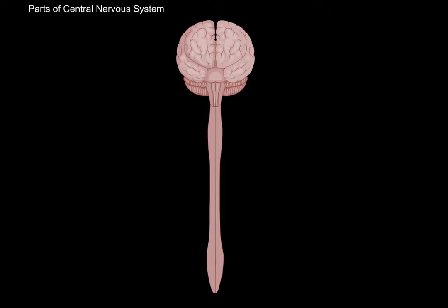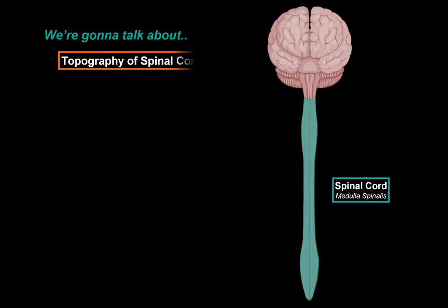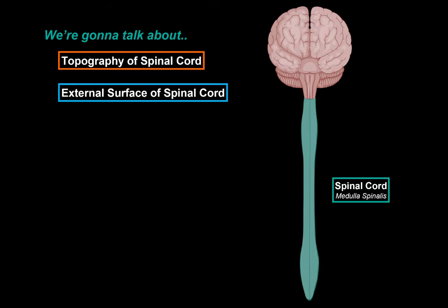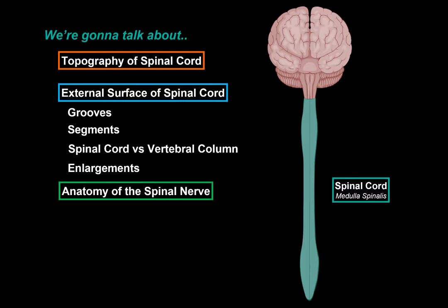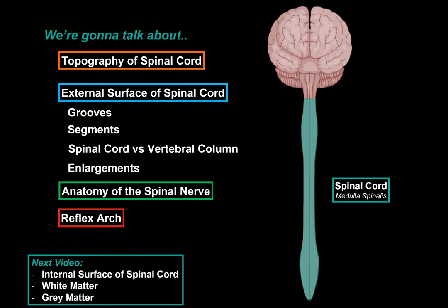The central nervous system consists of two parts: the encephalon and the spinal cord. In this video, we're first going to go through the topography of the spinal cord — basically where it is, and where it starts and ends. Then we'll focus on the external surface, including all the grooves and fissures. We'll also go through the segments, their relationship with the vertebral column, the enlargements, the anatomy of the spinal nerve and its four branches, and then the types of reflex arches. The internal structures, nuclei, and tracts will be covered in the next video so this one doesn't get too long.